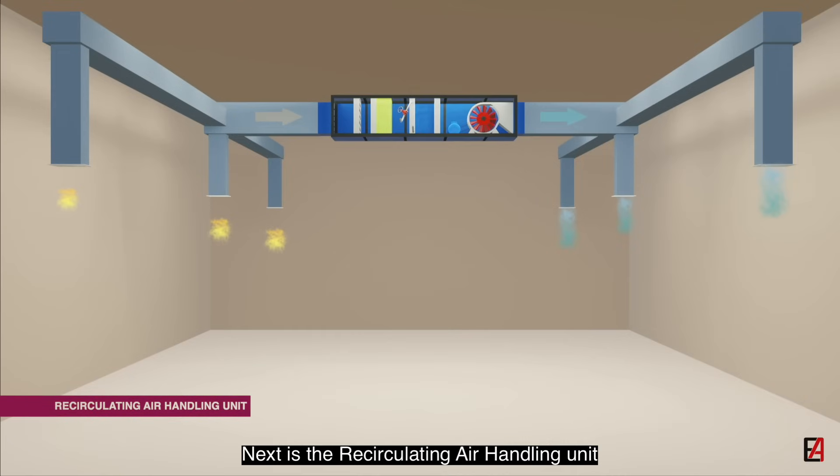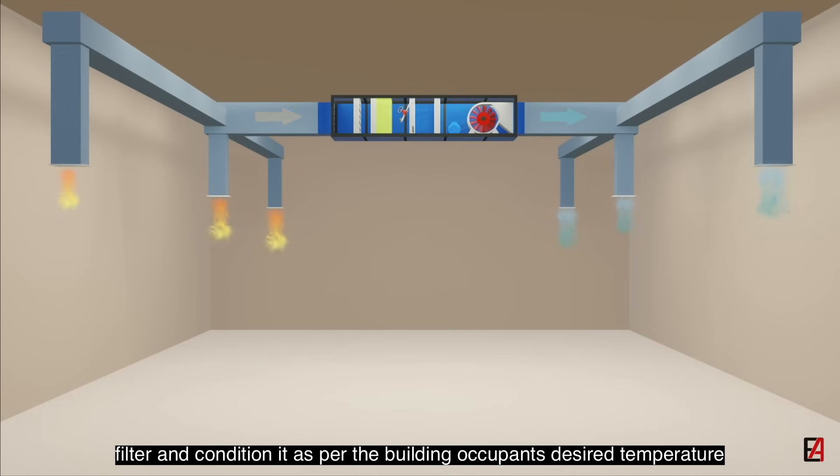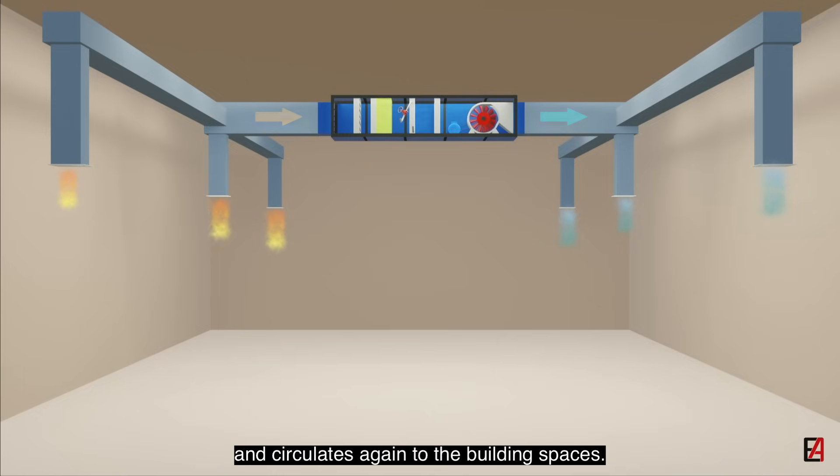Next is the recirculating air handling unit. This type of AHU takes air from the building spaces, filters and conditions it as per the building occupants' desired temperature and circulates it again to the building spaces. This is a 100% recirculating air system as the air is being recirculated continuously by the AHU.